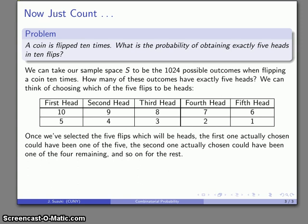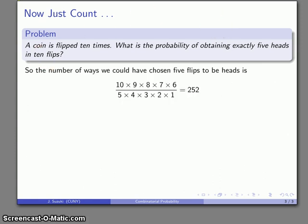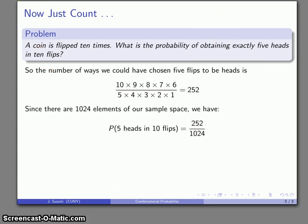And so the actual number of ways that I have of choosing five flips to be heads is going to be product of the terms on the top row divided by product of the terms along the bottom row, and that's going to be 252. Now, there's 1024 elements in our sample space, so the probability of getting five heads in 10 flips is going to be 252 out of 1024, around 25%.